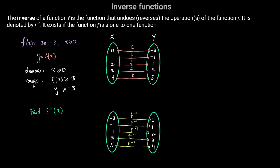When the input is 0 and we apply f, the output is negative 3. For the inverse function, if the input is negative 3, the output is 0. Similarly, when the input x equals 1 and we apply f, we get negative 1. For the inverse function, it reverses the operation — so when the input is negative 1, the output is 1.